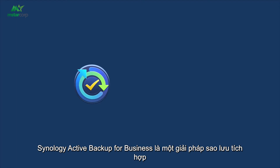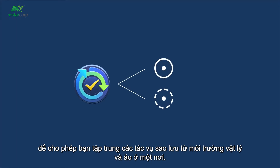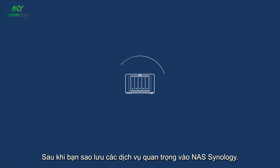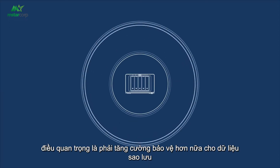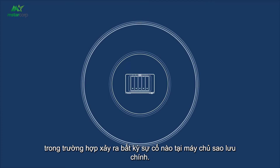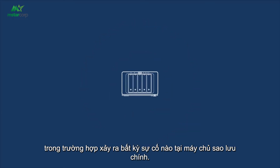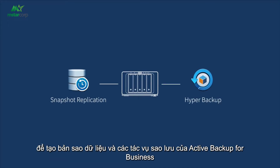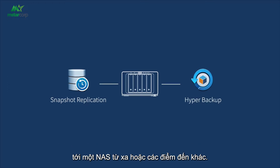Synology Active Backup for Business is an integrated backup solution to let you centralize the backup tasks from physical and virtual environments in one place. After you backup critical services to your Synology NAS, it's important to add further protection to the backup data in case of any accidents at the primary backup server. You can choose Snapshot Replication or Hyper Backup to create copies of the data and backup tasks of Active Backup for Business to a remote NAS or other destinations.